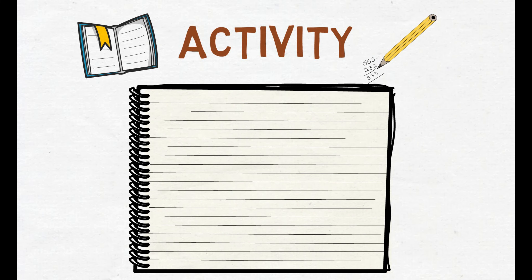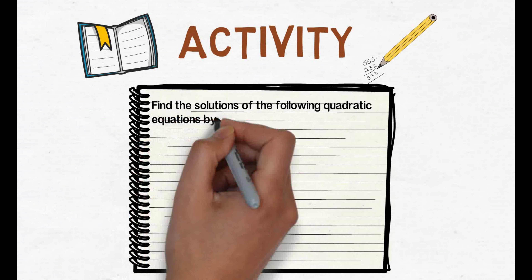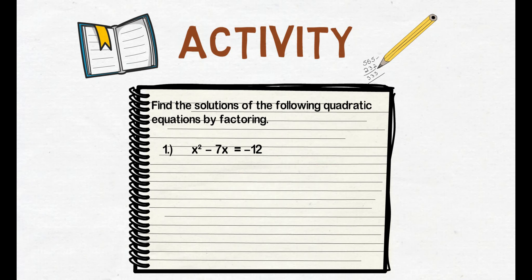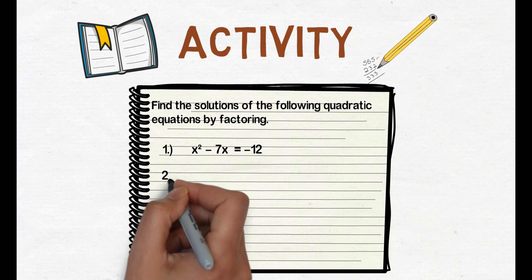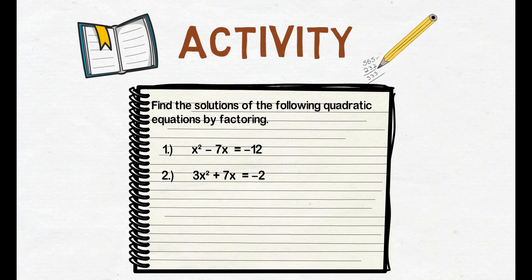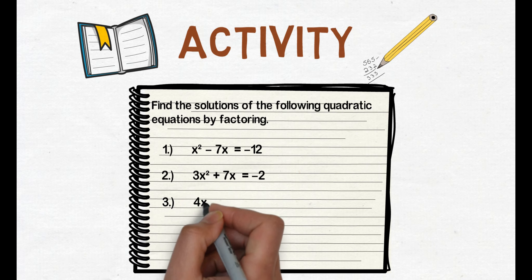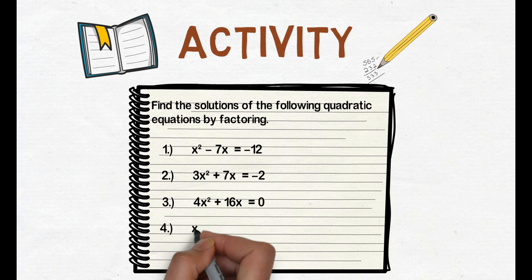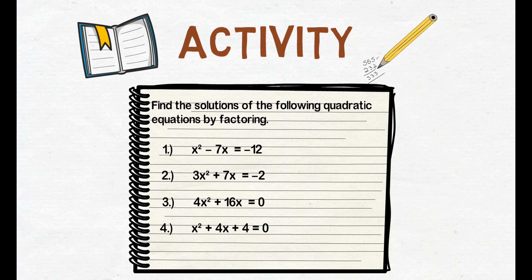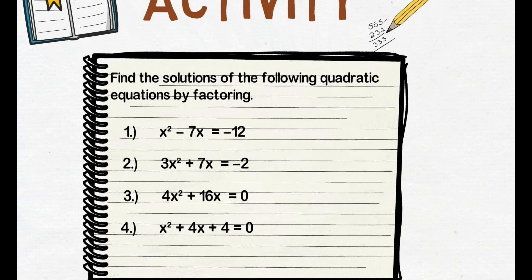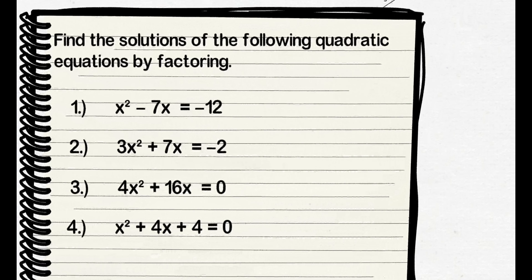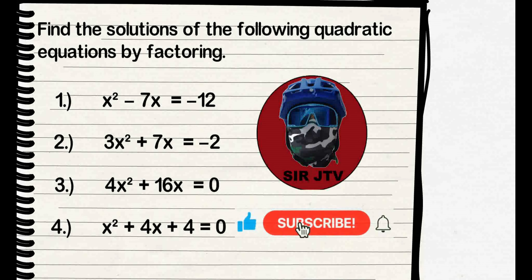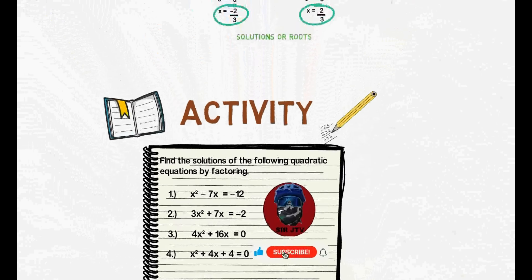For your activity, find the solutions of the following quadratic equations by factoring. Number 1: x squared minus 7x equals negative 12. Number 2: 3x squared plus 7x equals negative 2. Number 3: 4x squared plus 16x equals 0. And number 4: x squared plus 4x plus 4 equals 0. Pwede nyong i-comment sa comment box ang inyong mga sagot. That's all for now. Sana marami kayong natutunan sa video lesson na ito. Huwag kalimutan mag-subscribe para updated kayo lagi sa mga i-upload kong mga video lessons. Paalam!